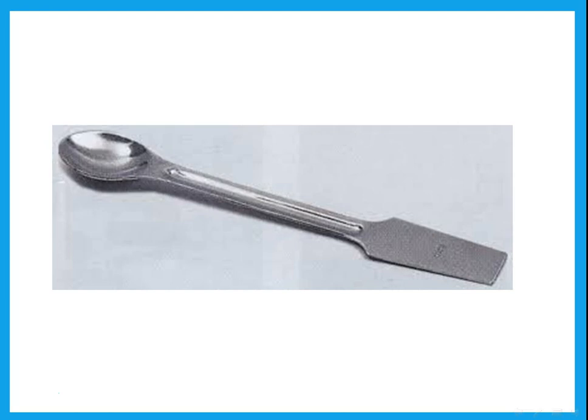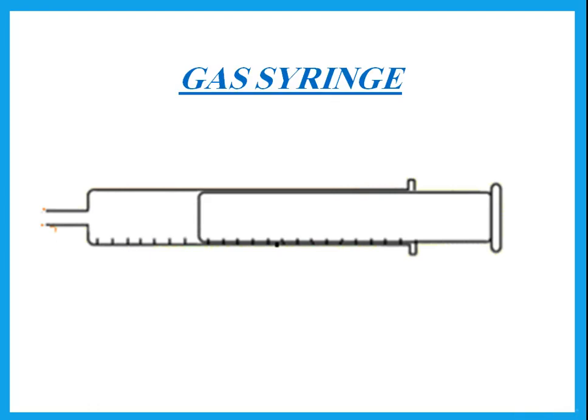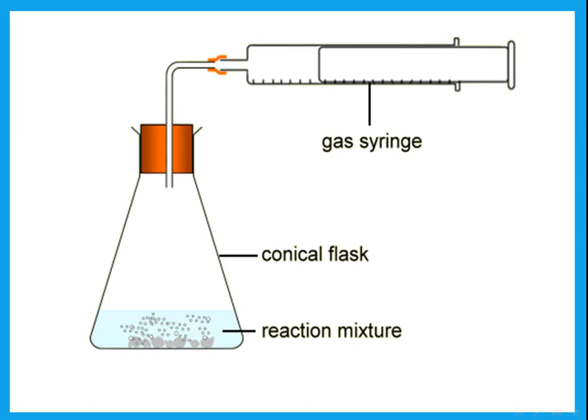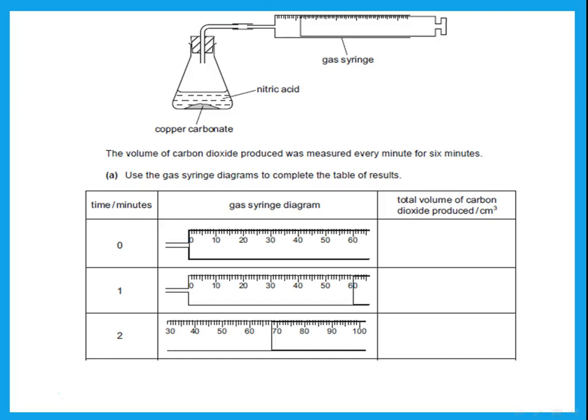What is the name of this? This is something made of metal that I use to take solids out of a container — this is called a spatula. Remember the spatula is made of metal, so never use it to stir a solution because the acid in the solution would react with the metal. When we stir a solution we use a glass rod. What is this? This is a gas syringe. A gas syringe is used to collect gases and measure the exact volume — if a reaction gives out gas I collect it in the gas syringe.